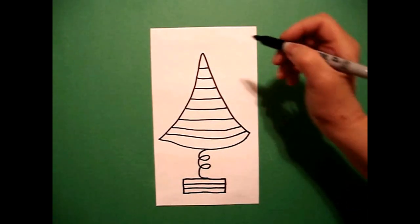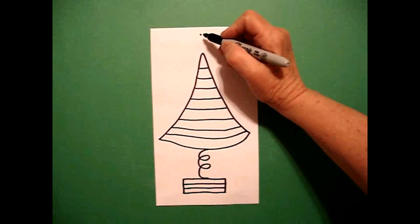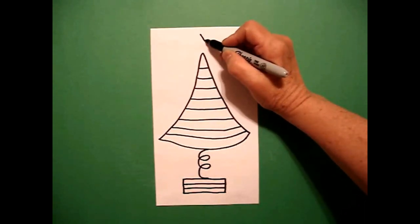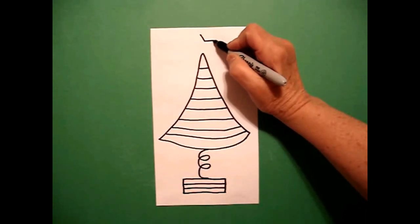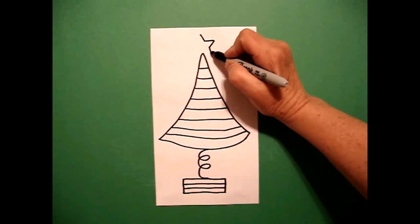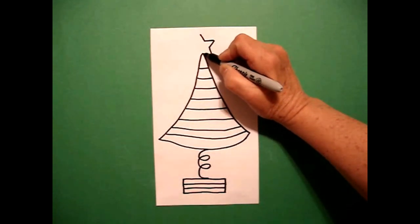At the top, I'm going to do a star. So I'm going to put a dot. Straight line down, straight line out, straight line down, straight line out, straight line up, connect.